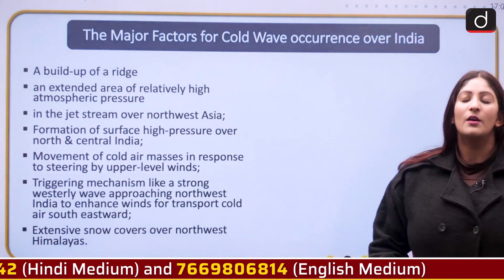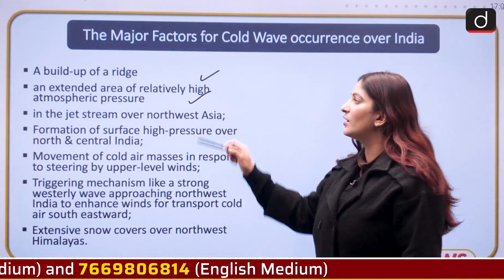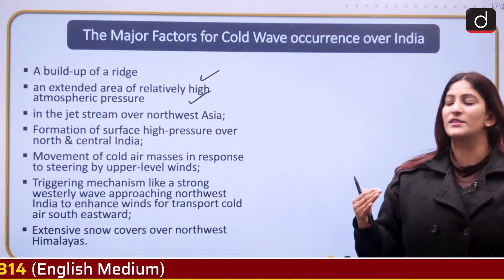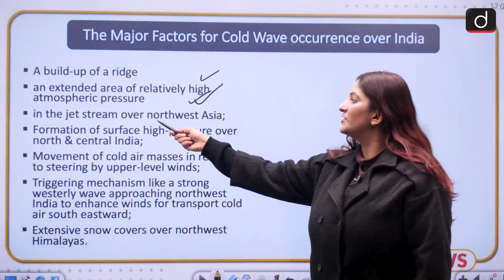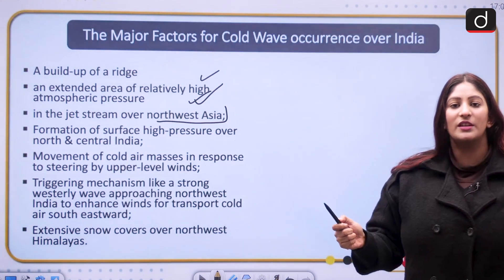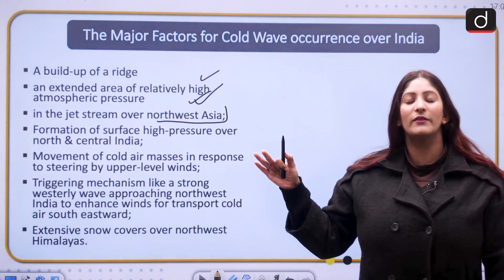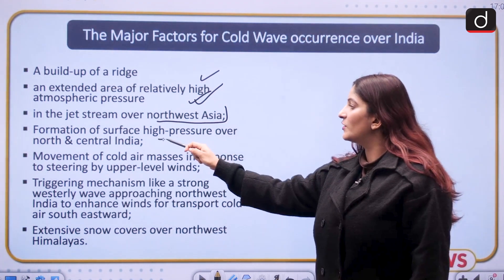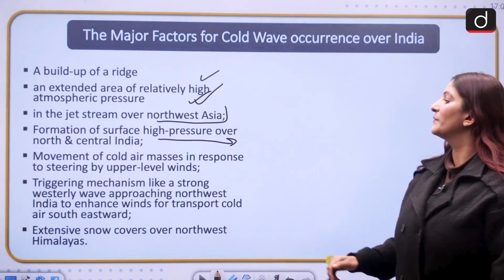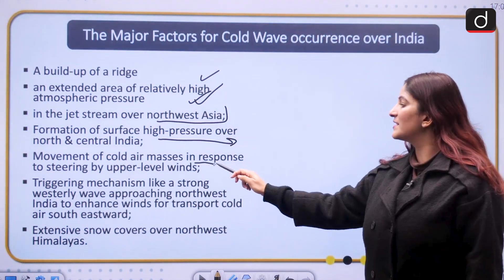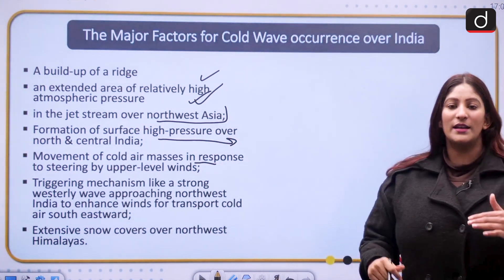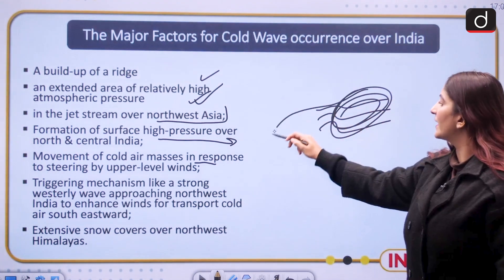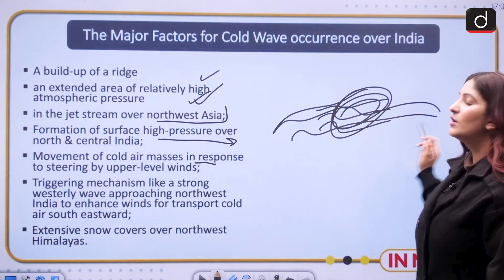How does the cold wave develop? When there is a build-up of a ridge — an extended area of relatively high atmospheric pressure — due to the cold persisting over this region. When a ridge is formed in the jet stream over northwest Asia, the jet stream carries this cold wave along the Asian region. The formation of surface high pressure over north and central India, and movement of cold air masses in response to steering by upper wind levels, also plays a role.